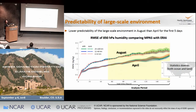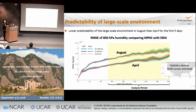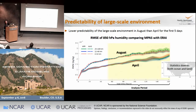Looking at the predictability of the large-scale environment, we examine the root-mean-square error of 850 hPa humidity and 500 hPa height. You can see that error growth associated with summertime is much faster than springtime. Therefore, it is quite a bit more difficult to simulate MCSs in summer than in spring. Potentially, another reason is that not only the large-scale environment matters, but land surface conditions and evapotranspiration could also be very important in summer as well.